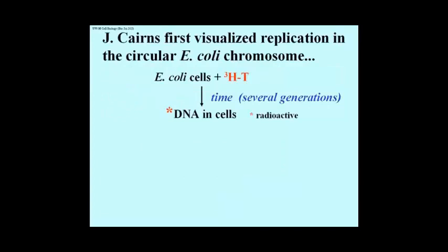John Cairns in Scotland hit on the idea that if he allowed E. coli cells to grow on medium containing a radioactive nucleotide, in this case tritiated thymidine or H3-thymidine, the cells would make radioactive DNA, which he could then visualize by a technique known as electron microscope autoradiography. Cells were incubated with the thymidine for several generations, so that all the cells eventually contained radioactive DNA.